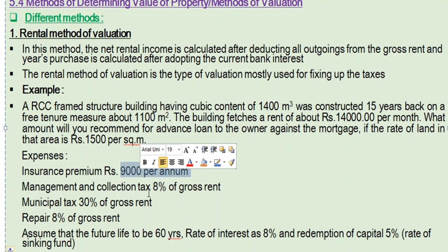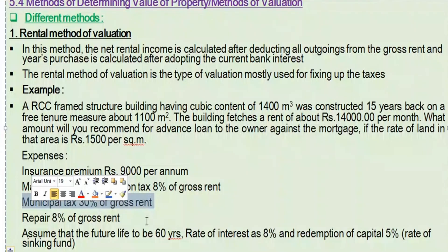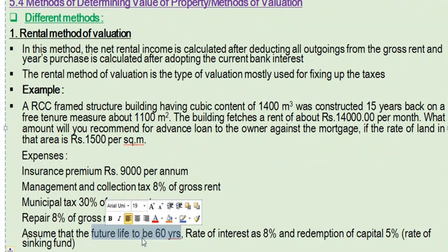Outgoings: Management and collection tax is 8% of gross rent. Municipal tax is 30% of gross rent. Repair is 8% of gross rent. Assume the future life of the building to be 60 years. The serviceable rate of interest is 8%, and the rate of interest for redemption of capital (sinking fund) is 5%.